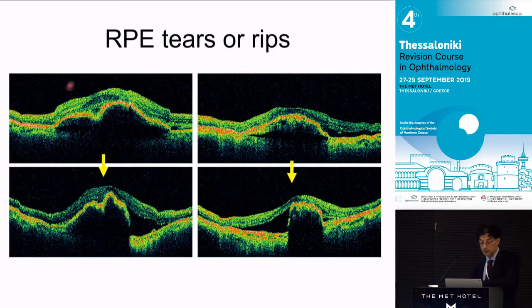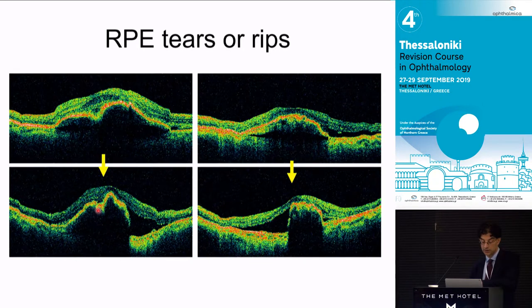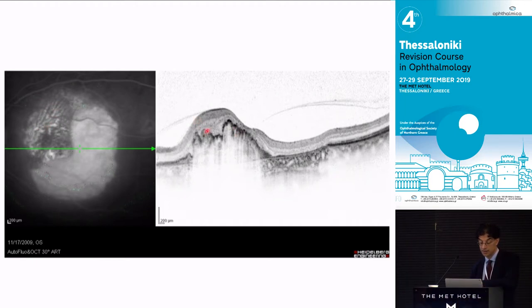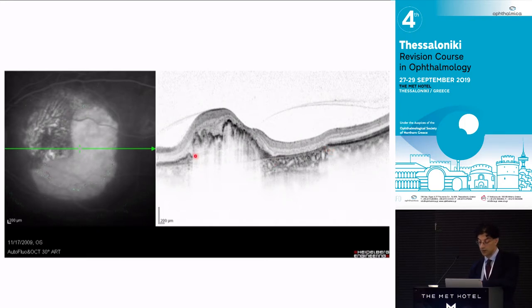RPE rips complicate type 1 CNV. The elevated RPE expands — like blowing up a balloon — it bursts, and the RPE rolls under itself so it is corrugated. There is no RPE in the torn area, so light can penetrate, creating hyper-transmission into the choroid. On fluorescein, the RPE is ripped in one direction: you see scleral hyperfluorescence, double layers of folded RPE on one side, and missing RPE on the other, with light penetrating through — just like geographic atrophy — illuminating the choroid.